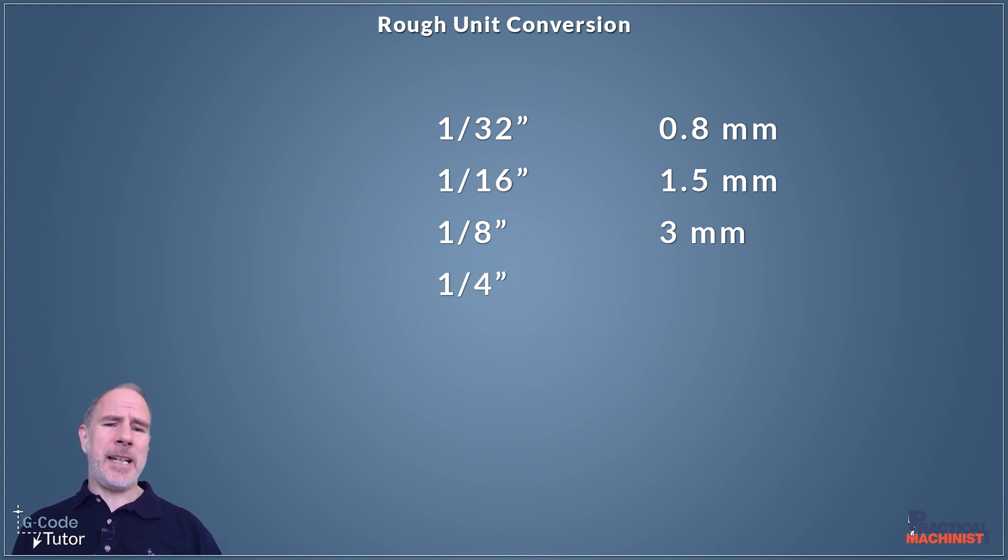A quarter, 0.250 in decimal, equals 6.35. So 6.35 is the number I normally remember for a quarter of an inch, but we can round that down to six millimeters for reference if we need to.